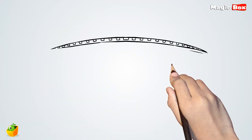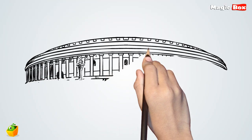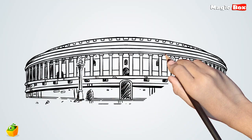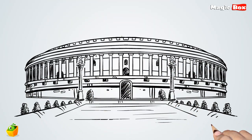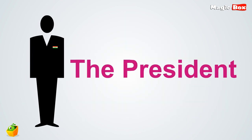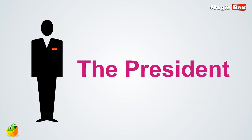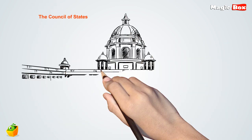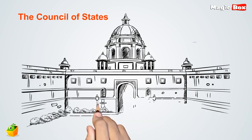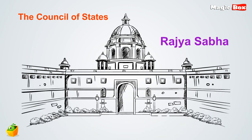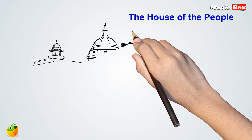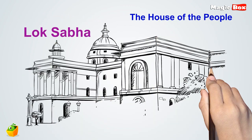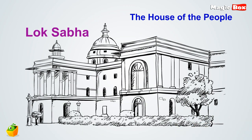Parliament is the supreme legislative body of a country. Parliament of India consists of the President and the two houses known as the Council of States, Rajya Sabha, and the House of the People, Lok Sabha.